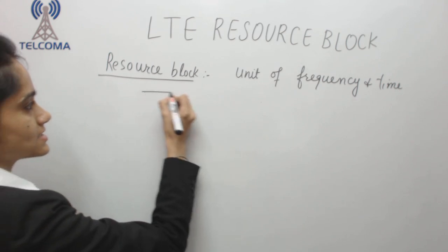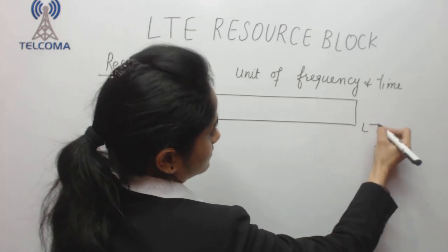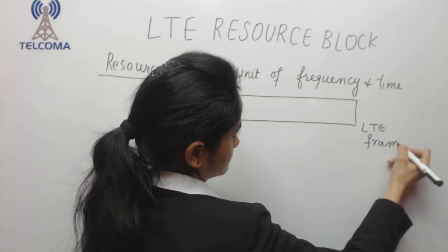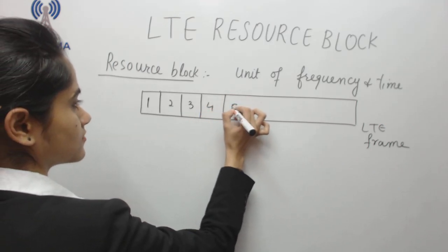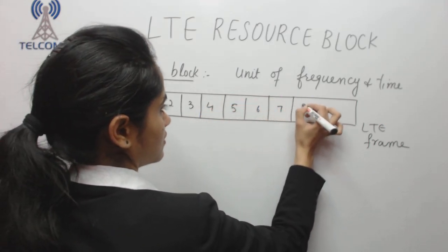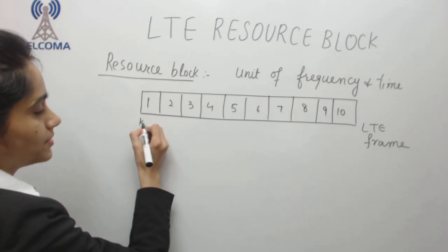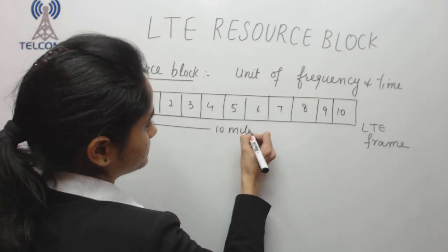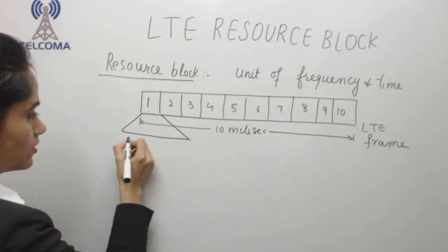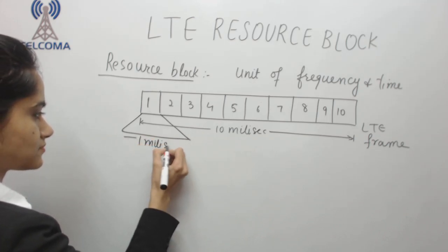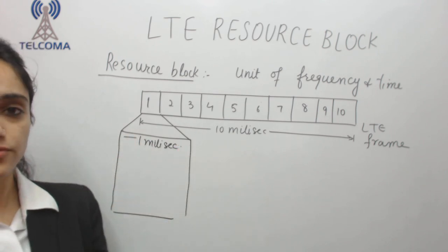Let's discuss the resource block in context of the LTE frame. In an LTE frame we have 10 subframes, and the complete duration of the frame is 10 milliseconds. So the duration of one subframe is 1 millisecond. In this 1 millisecond, we need to find out where our resource block is.